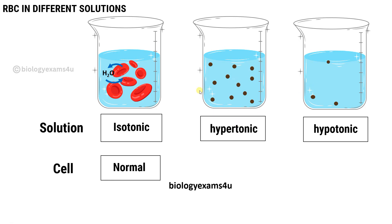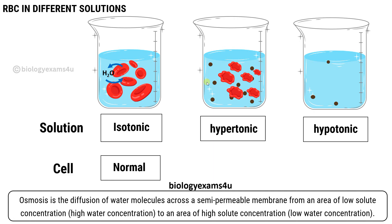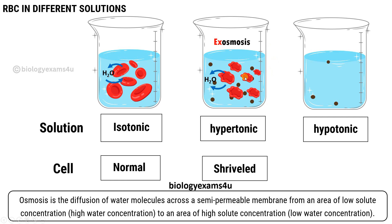Now we are going to place RBCs in a hypertonic solution. Hyper means high — the concentration of the external solution is high compared to the solute concentration inside the cell. To understand this we need to define osmosis. Osmosis is the diffusion of water molecules across a semi-permeable membrane from an area of low solute concentration — in this case, inside the cell — to an area of high solute concentration, in this case the external solution. So there will be movement of water from the cell to the external solution. The cell gets shrivelled or shrinks, and this is due to exosmosis — the exit of water to the outside solution from the cell. In hypertonic solution, the cell shrinks by the loss of water to the external solution.